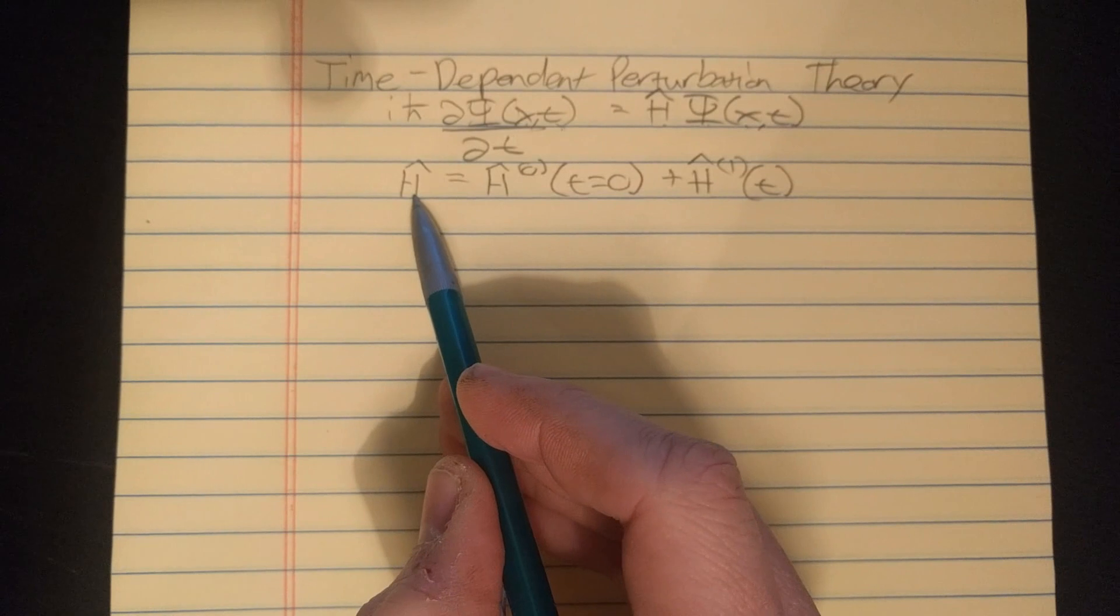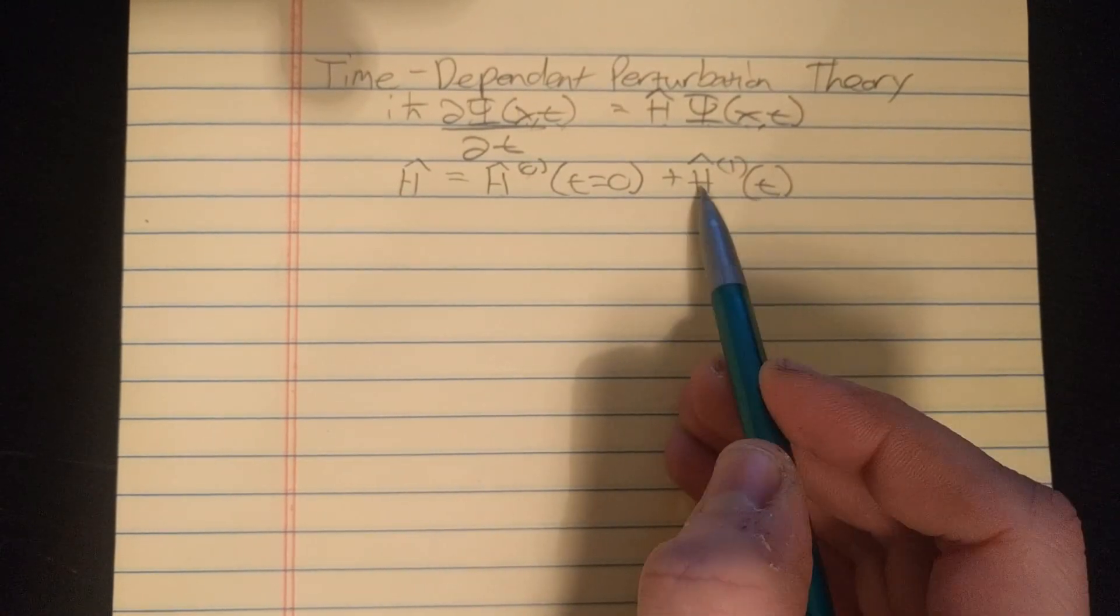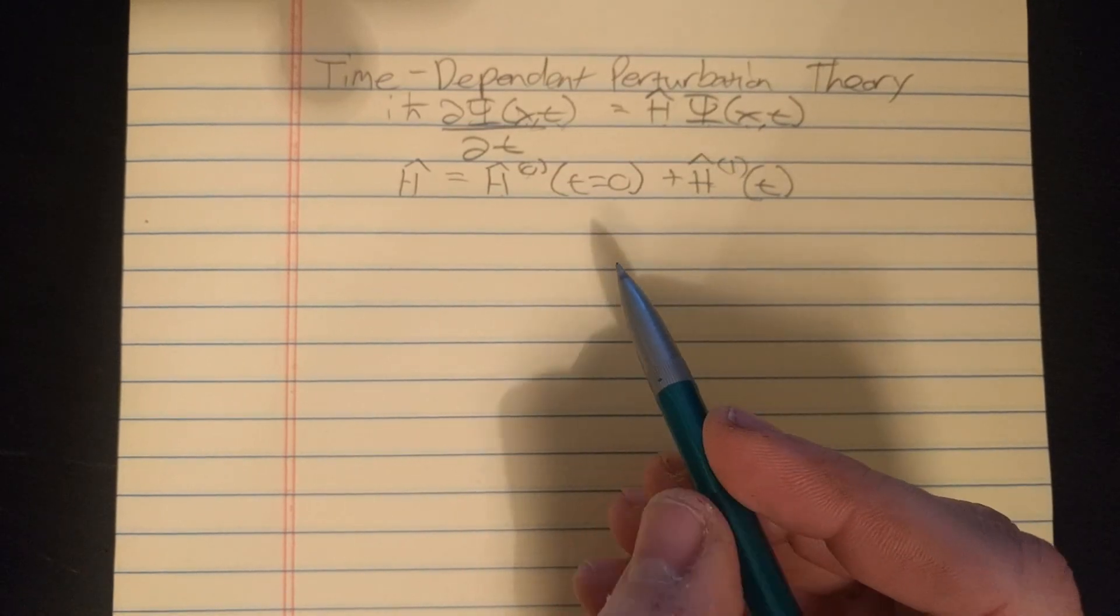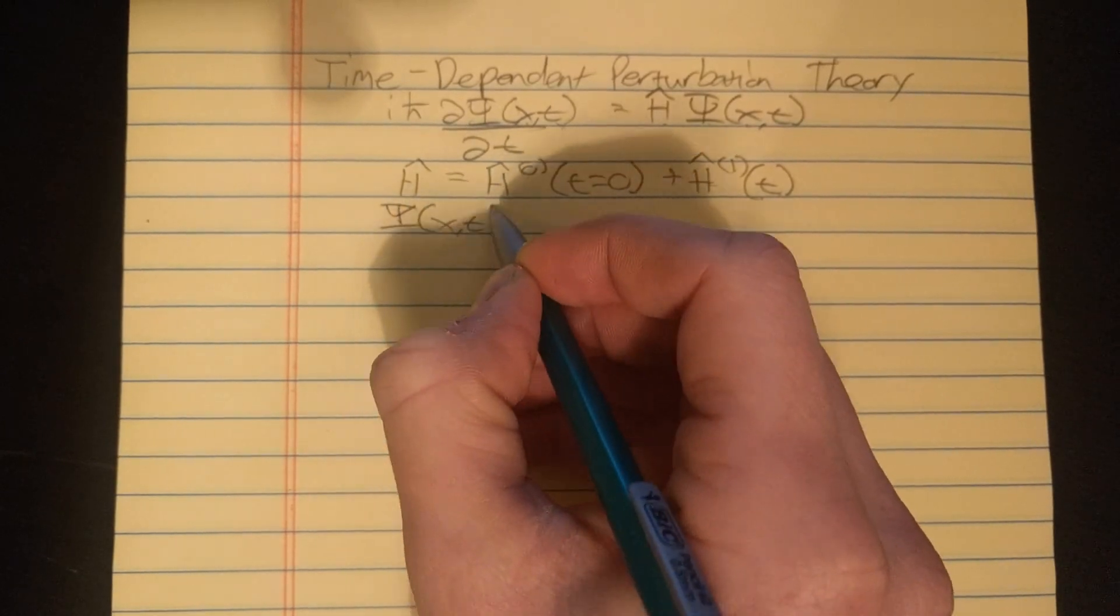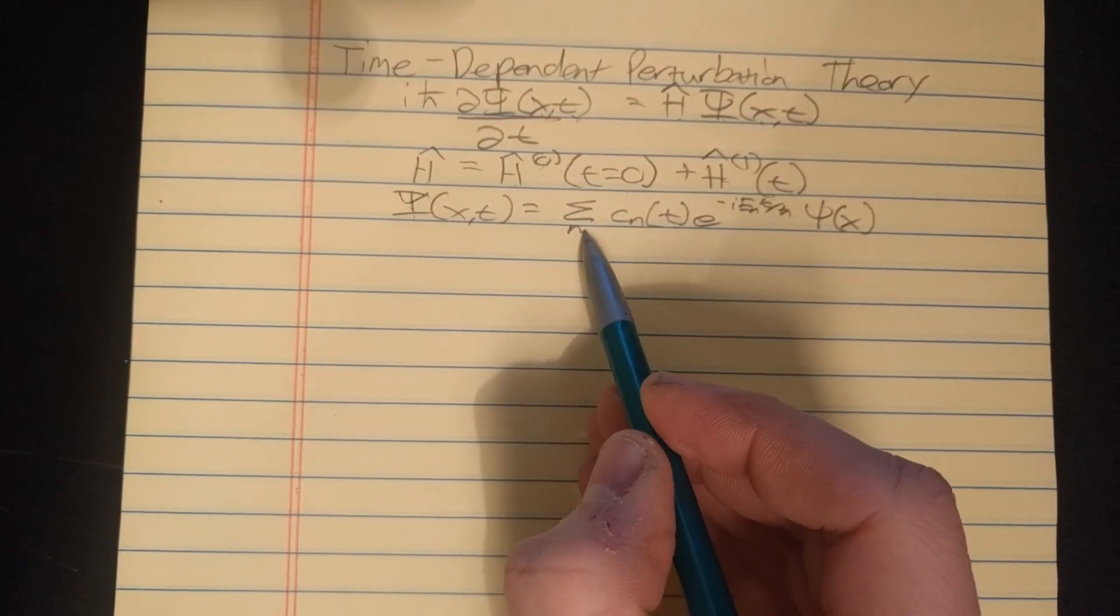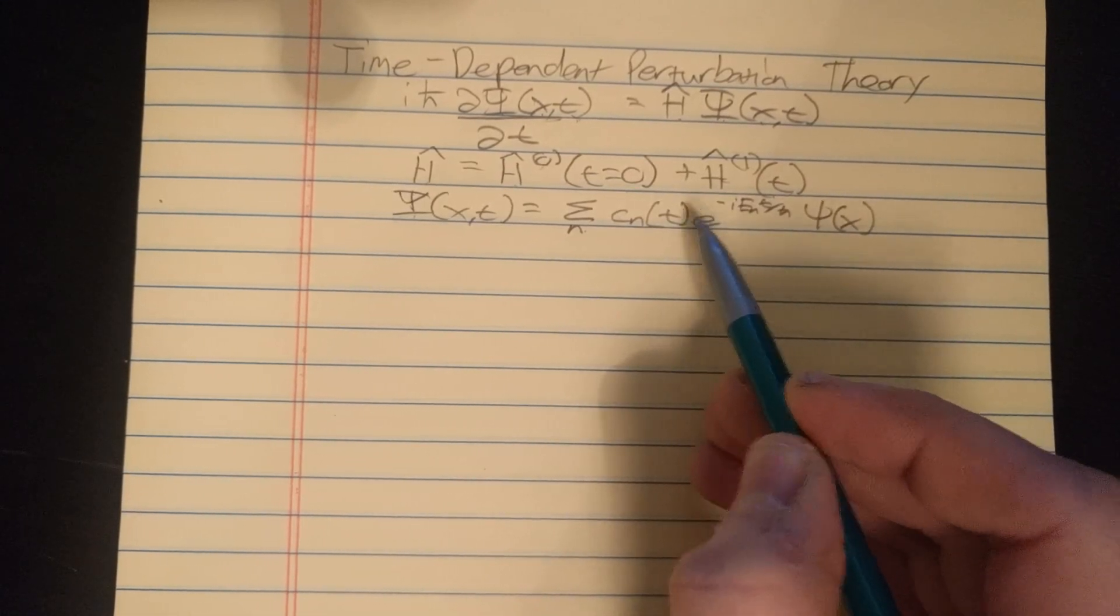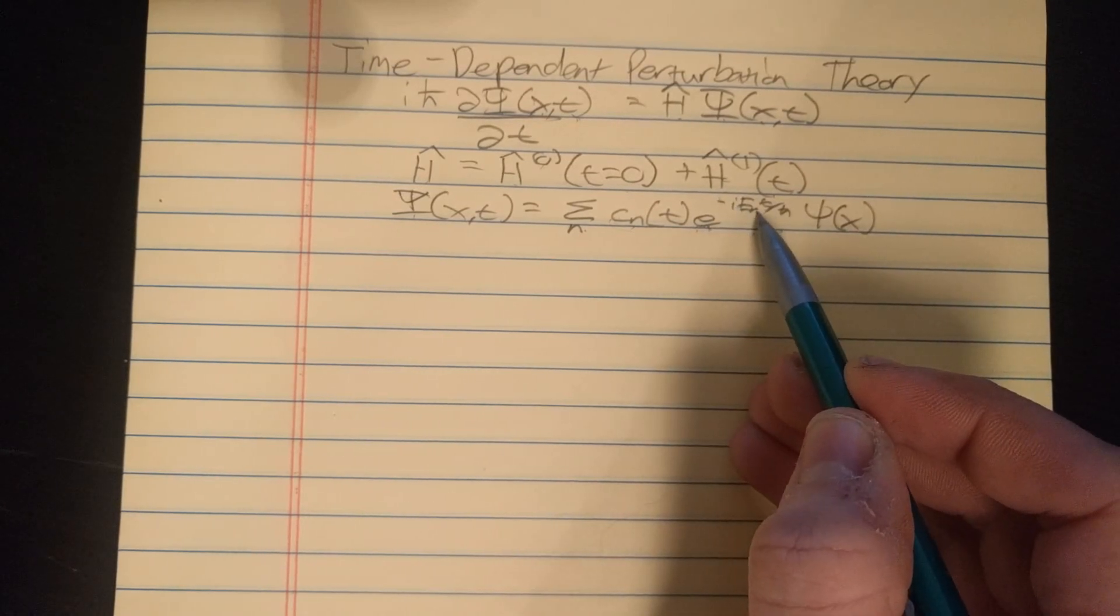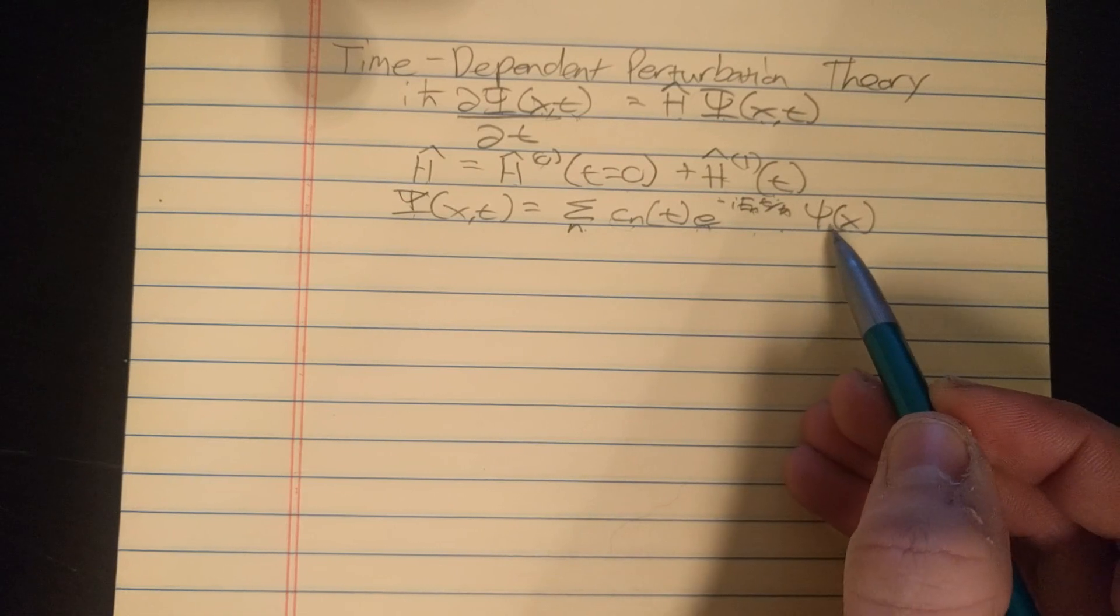Here we write our total Hamiltonian is equal to a time-independent part, which I'll call H superscript 0, plus a perturbative part which depends on time, which I will call H superscript 1. And we know from quantum mechanics we can write any general state as a linear combination of stationary states. Here I wrote our general state, capital psi, as a linear combination of some coefficients, and I separate my exponential decay part from my coefficient. Sometimes you'll see this term written as just one coefficient where it's implied this e to the negative i E_n t over h-bar is within the coefficient.